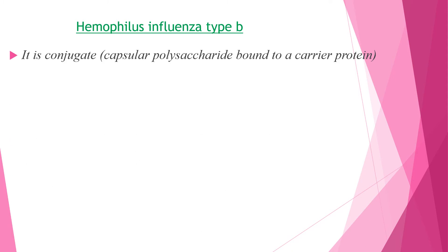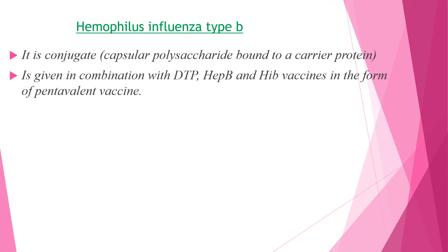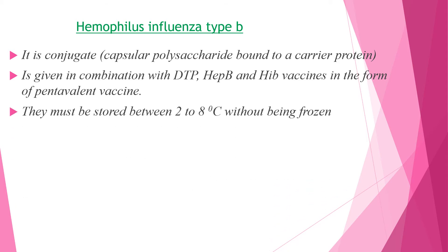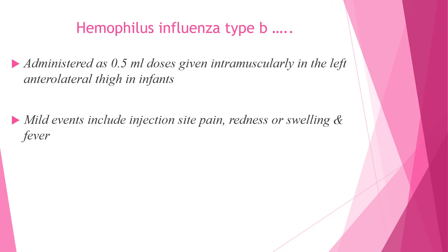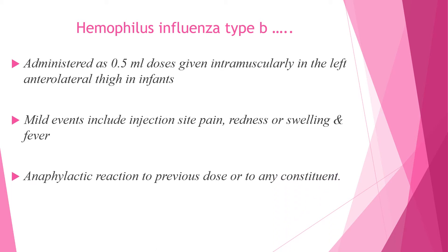Hemophilus influenzae type b (Hib) is a conjugate capsular polysaccharide bound to a carrier protein. It is given in combination with diphtheria, tetanus, pertussis, and hepatitis B as pentavalent vaccine, stored at two to eight degrees Celsius without being frozen. All penta vaccines are given at 6, 10, and 14 weeks. It is administered in the left anterolateral thigh. Mild events include injection site pain, redness, swelling, and fever. Anaphylactic reaction to previous dose or any constituent is a contraindication.